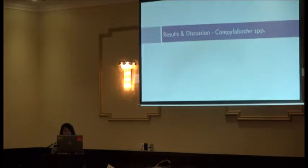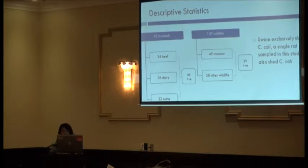I'll take you through the preliminary Campylobacter species prevalence and antibiogram data. We had 92 livestock and 107 wildlife samples total. Wildlife breaks down into 49 raccoon and 58 other wildlife, including skunks, mice, and rats. Interestingly, swine exclusively shed C. coli, which was also found in a single rat. This is being followed up with other studies.